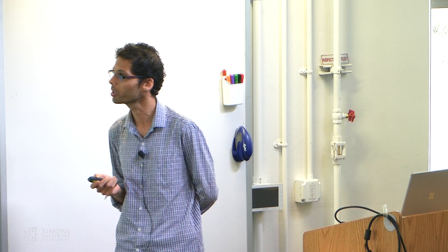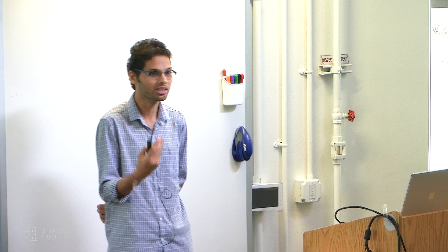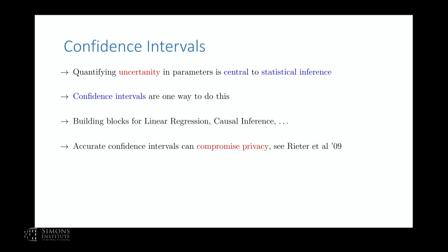We all know that exact confidence intervals can compromise privacy — if you release too many exact confidence intervals, you can reconstruct the data. In fact, if you give me just one confidence interval, I can figure out the mean, which is the center of the interval. The question for this talk is: how do you estimate valid confidence intervals — meaning intervals that give you the right coverage, whatever is advertised — under the constraint of differential privacy? We'll be doing both pure and approximate differential privacy.